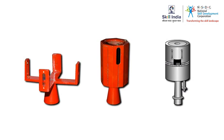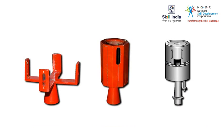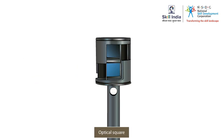The different types of cross staff are open cross staff, French cross staff, and adjustable cross staff. The other instrument is the optical square, which uses reflection to calculate the right angle.